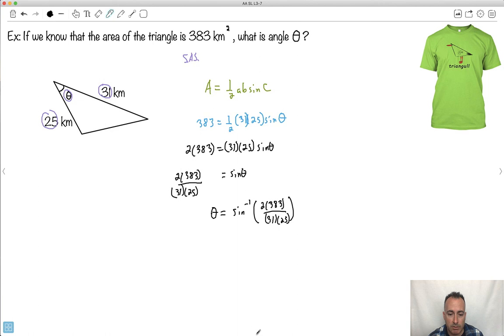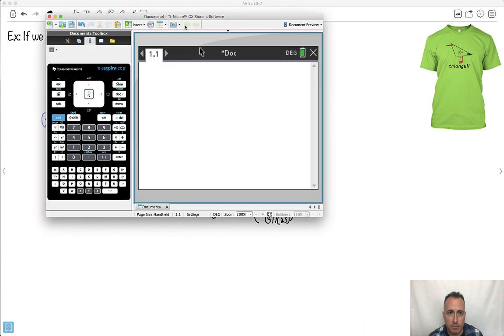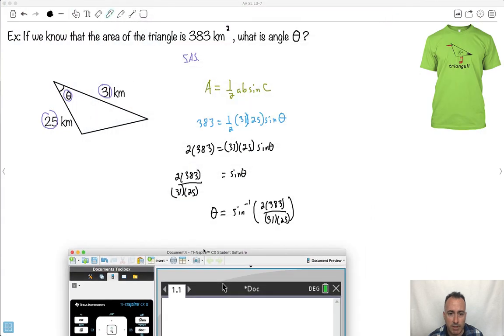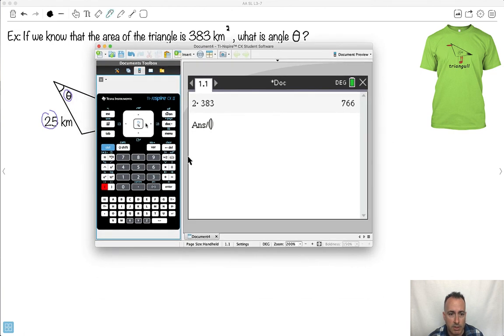Let's see how this goes. Let me do that on my good old calculator. Make sure that my calculator is in degree mode. And I'm just going to do this. So 2 times 383 is that. I'm going to take that and divide that by, in brackets, 31 times 25. Just trying to get that answer there. There we go. I get some fraction.